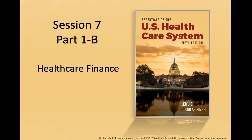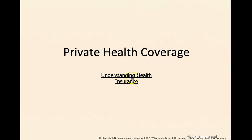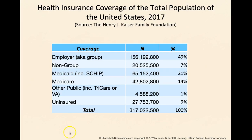Let's continue with the lecture. This time we're going to talk about private health coverage. We should start by understanding the mechanisms of health insurance, because private health coverage is basically private health insurance. Before we do that, let's examine the ratio of insured and uninsured and the type of coverage that the total population of the United States has as of 2017.